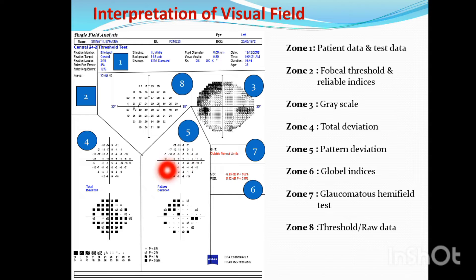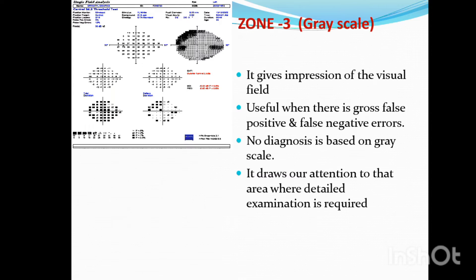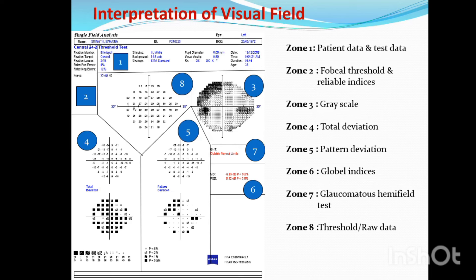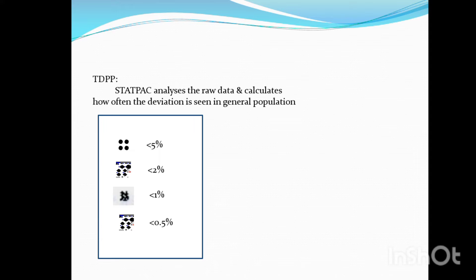So this is the probability indices. The probability indices are less than 5%, less than 2%, less than 1%, and less than 0.5% of the population. Meaning that the darker the symbol, the more statistically rare and significant the depression — less than 0.5% is very rare in the normal population.